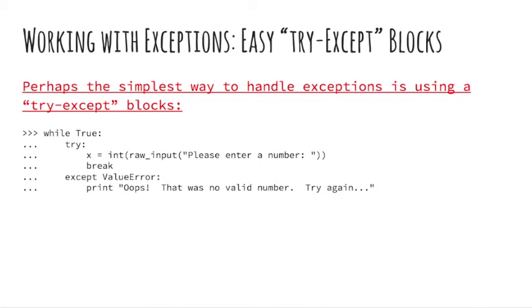If an exception occurs during execution of the try clause, the rest of the clause is skipped. Then, if its type matches the exception named after the except keyword, the except clause is executed, and then execution continues after the try statement. If an exception occurs which does not match the exception named in the except clause, it is passed on to other try statements. If no handler is found, it is an unhandled exception and execution stops with a message as shown above.